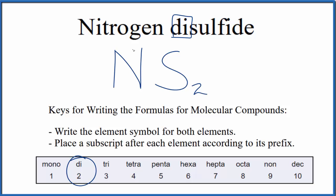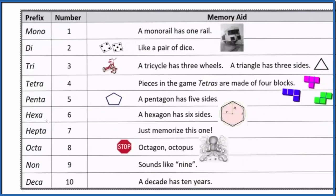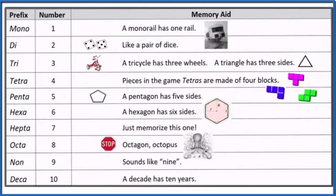That makes this the formula for nitrogen disulfide, NS2. If you need help memorizing the prefixes when you're writing the formula for molecular compounds like NS2, this table here might be useful. This is Dr. B, and thanks for watching.